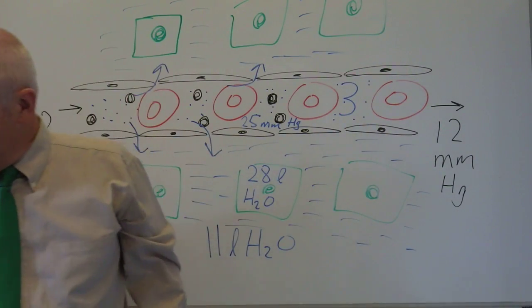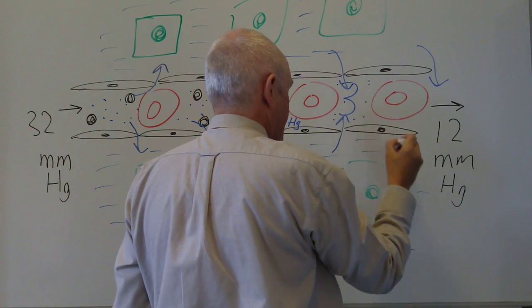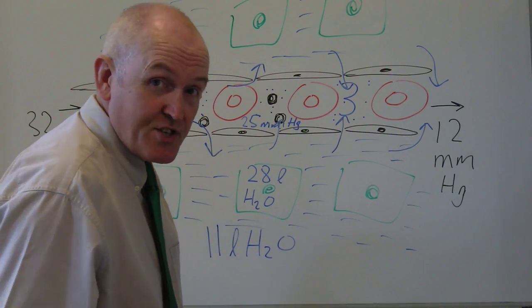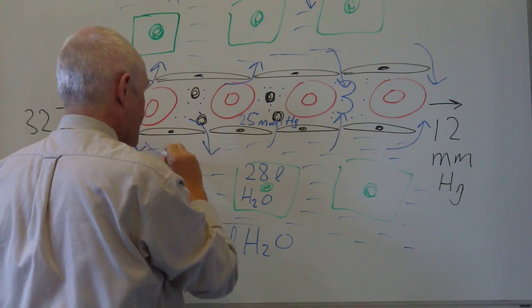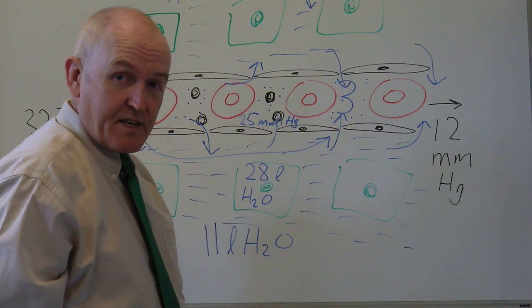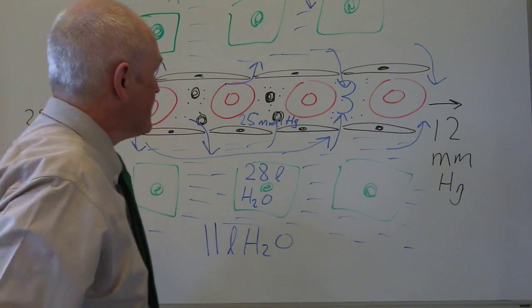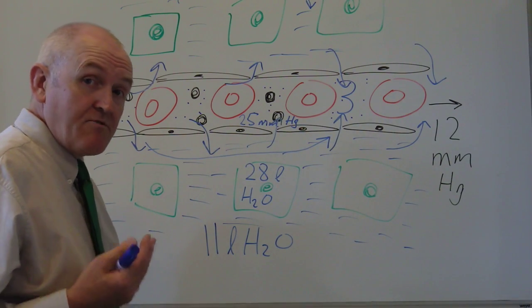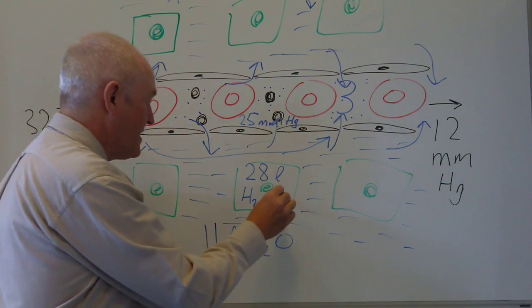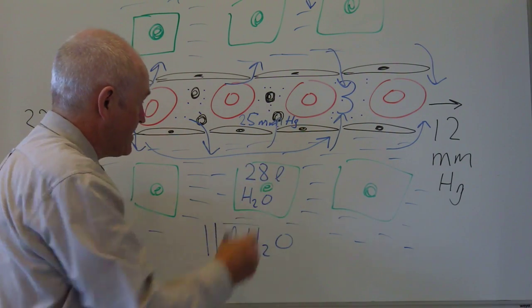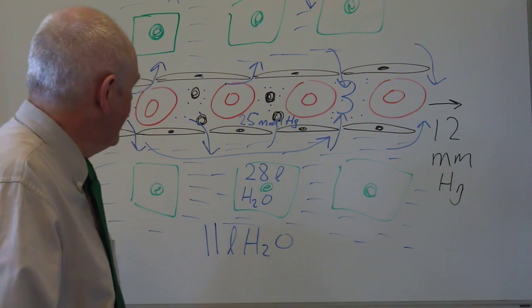At the venous end, there is more osmotic pressure sucking back in than hydrostatic pressure pushing out, which means that tissue fluid will be reabsorbed. This gives us a microcirculation of tissue fluid: tissue fluid formed at the arterial end of the capillary, circulating through the tissues, and being reabsorbed at the venous end — bathing the cells and keeping them moist. This diagram nicely shows us the intravascular compartment, the interstitial compartment, and the intracellular compartment — the compartmentalization of body fluids in this tissue.